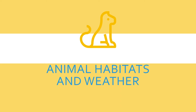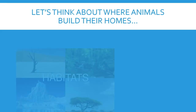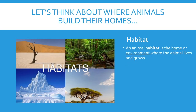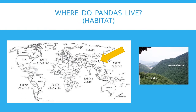Animal Habitats and Weather — let's see what you remember. Let's think about where animals build their homes. Homes and habitats are the same thing. An animal habitat is the home or environment where the animal lives and grows. I see four different habitats in the picture, and different animals live in the different habitats. Do you remember where the panda bears live? We started out at home in Maryland and went all the way across the ocean to China, where we found the mountains with the bamboo forest. That's where the panda bears make their home — that's their habitat.